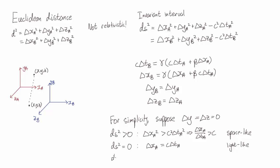Lastly, there's the case where ds squared is less than zero. So these are the two events where signals can travel between them. One of them can influence the other. And these are the events that we call time-like.